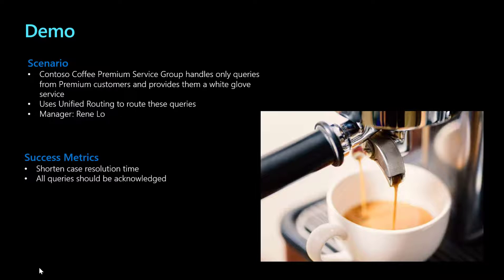She learns about fallback queues and instantly remembers an incident last year where, due to a misconfiguration, customer queries went into the global default queue and got mis-assigned. The CSAT scores were impacted badly that week. So as to never be in that situation again, she sets up a fallback queue, particularly for the premium customers workstream.